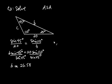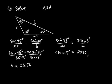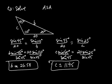Likewise, sine of 45 divided by 20 equals sine of 25 degrees divided by C. Cross-multiplying: C times sine of 45 equals 20 times sine of 25. Dividing by sine of 45 gives C approximately equal to 11.95. That completes the triangle — I found all angles and all sides.